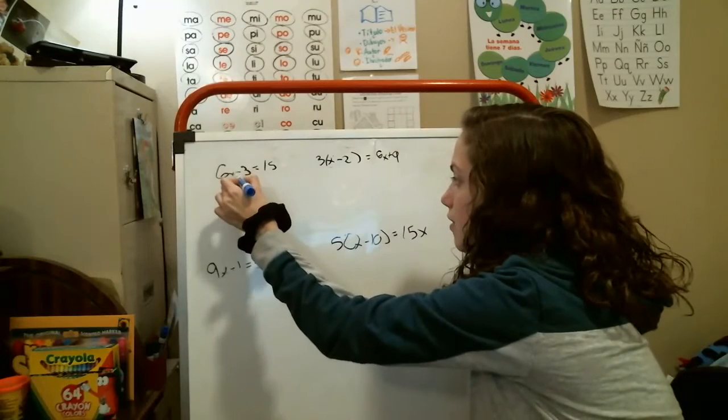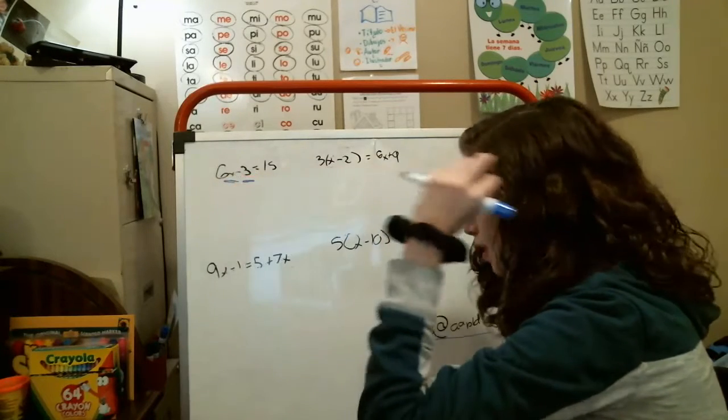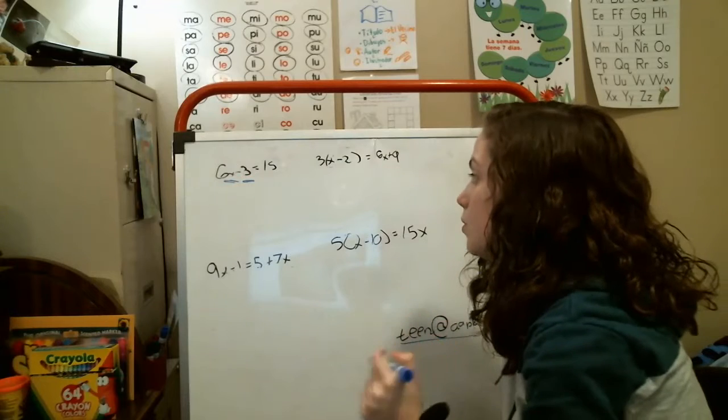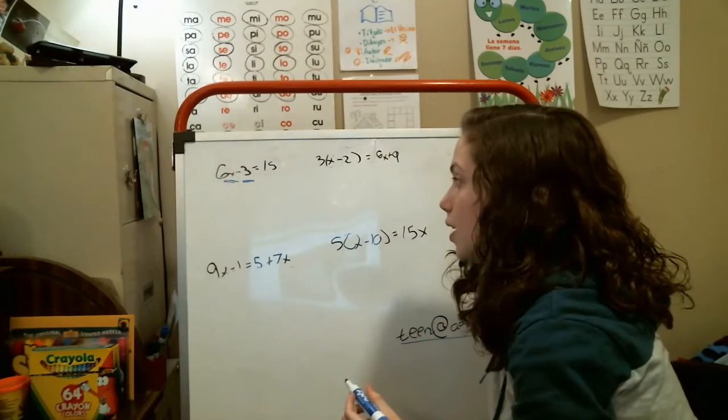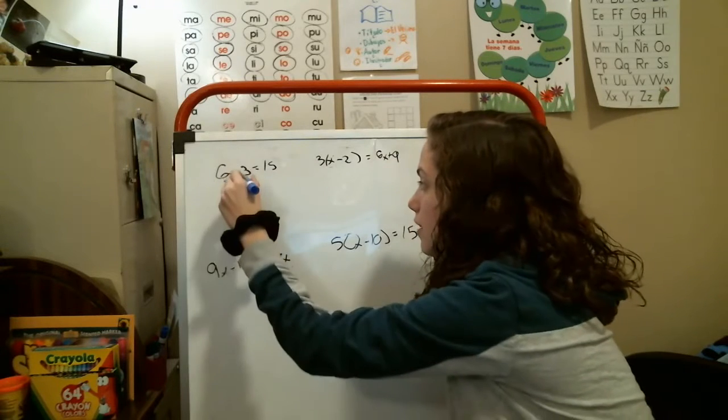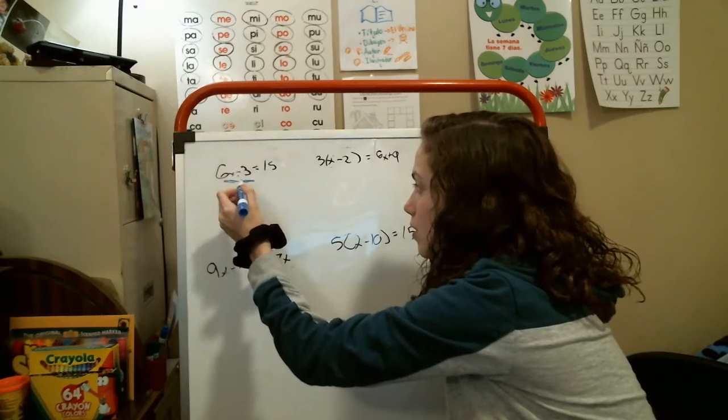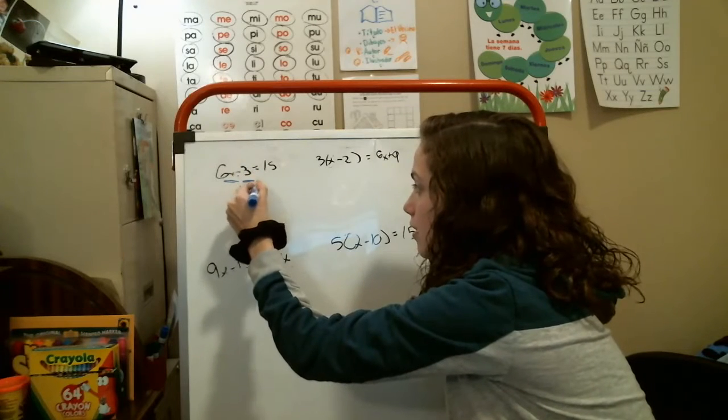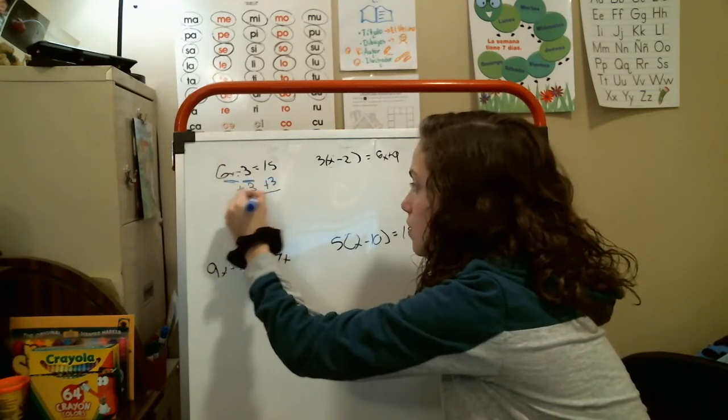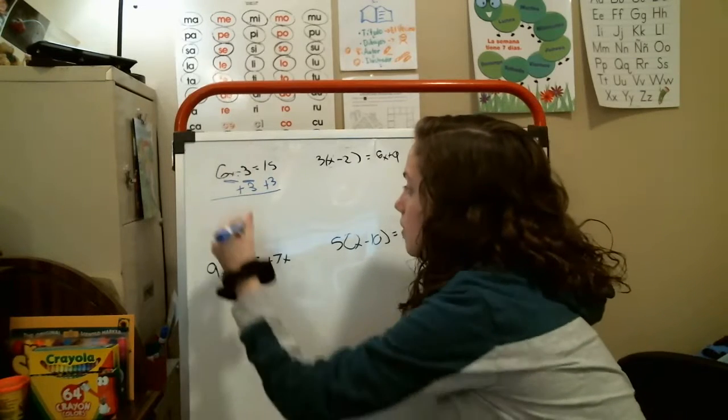There is a negative sign or a subtraction sign. What you have to do is get rid of this 3. In order to do that, you have to do the opposite of what this sign says. That means you have to add it. You have to add 3 here and add 3 here, because if you do it to one side, you have to do it to the other side.